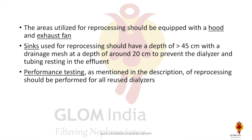The area to be utilized for reprocessing should have a hood and exhaust fan. The sink should have a depth of at least 45 cm, with a drainage mesh at a depth of around 20 cm to prevent the dialyzer and tubing from resting in the effluent.